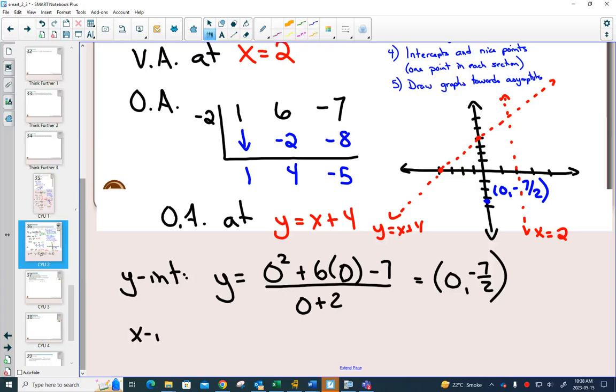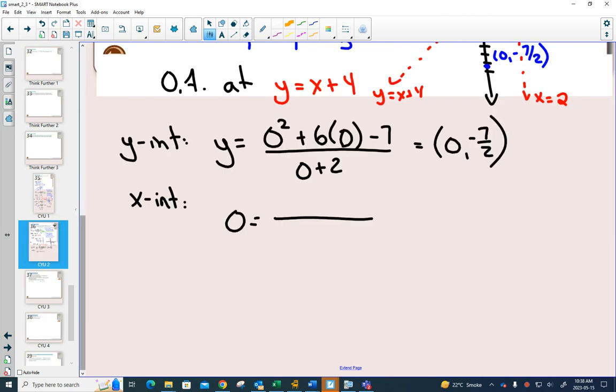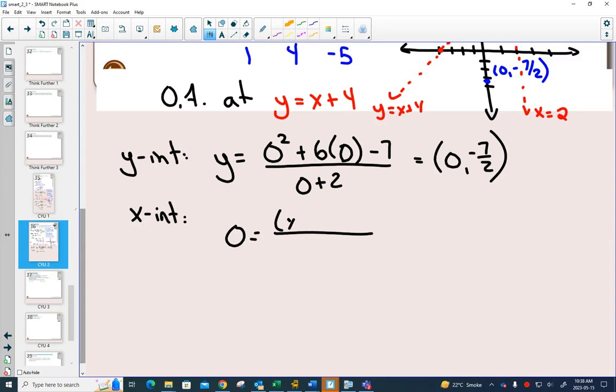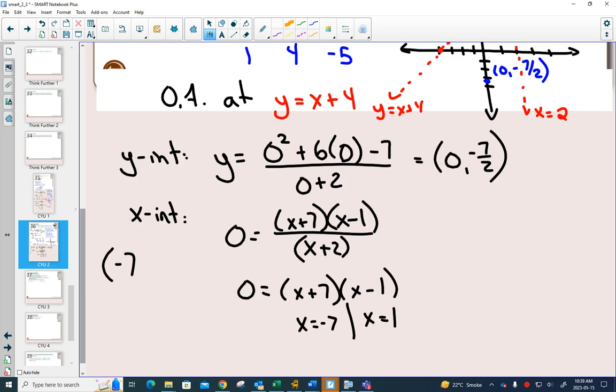Okay? The x-intercepts. Plug in 0 for y, and it will be really easy if you use the factored form. So I'm going to write out the factored form, which is x plus 7, x minus 1 over x plus 2. Again, you only need to look at where your numerator is equal to 0. And since it's already factored, we know that we have an x-intercept at negative 7 comma 0 and 1 comma 0.